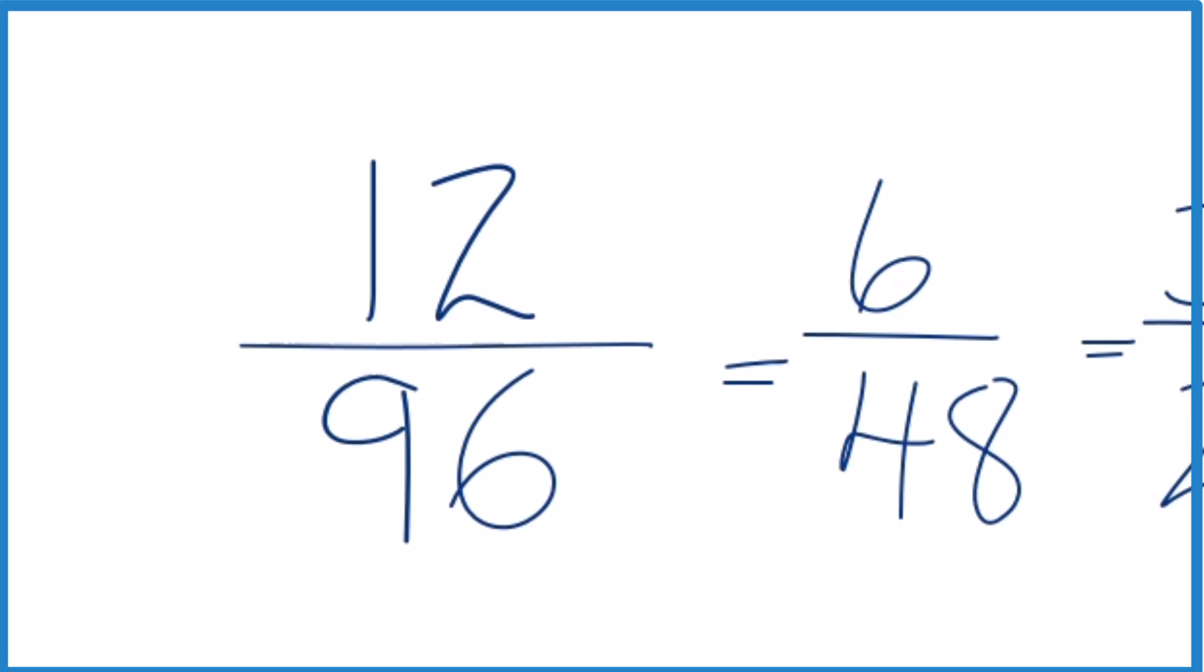So that's it. That's how you figure out 12/96, how you simplify it down to lowest terms. The answer is 1 eighth. This is Dr. B. Kelly. Thanks for watching.